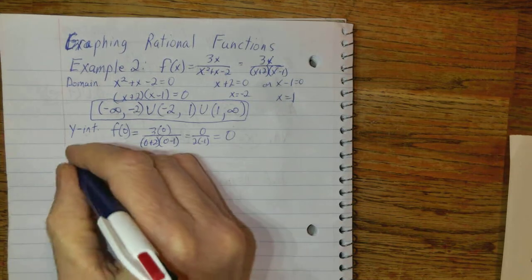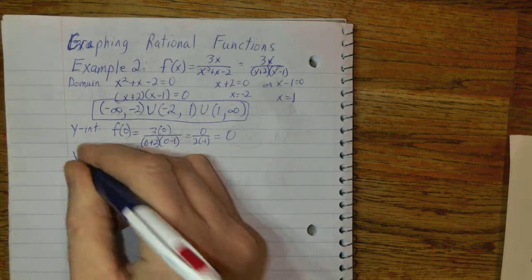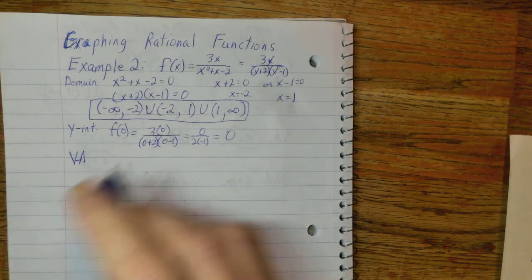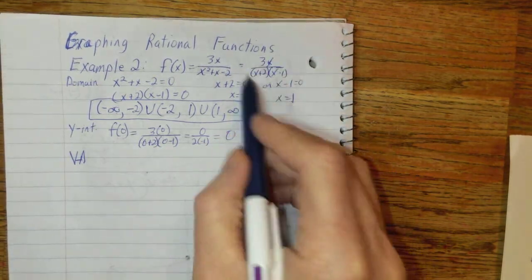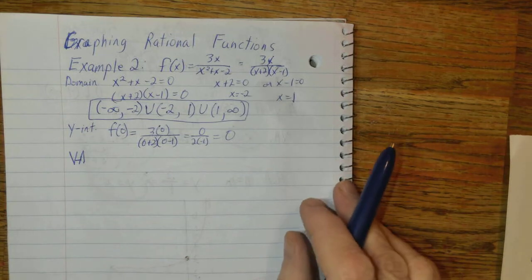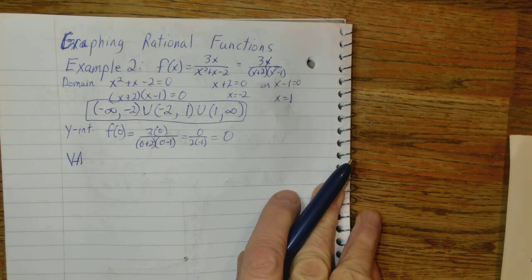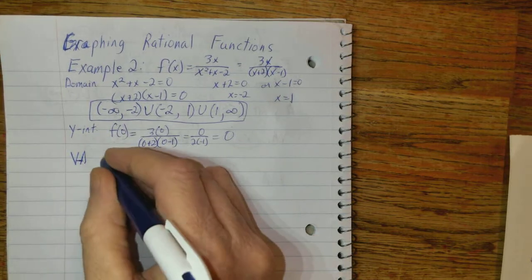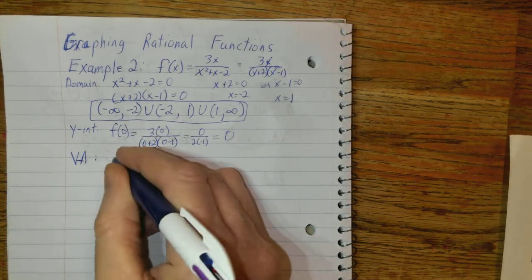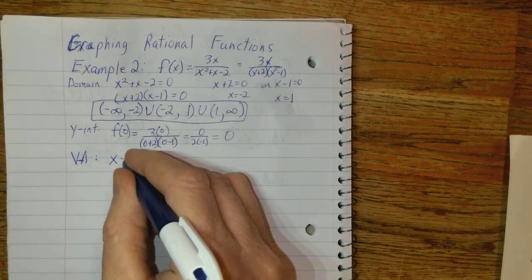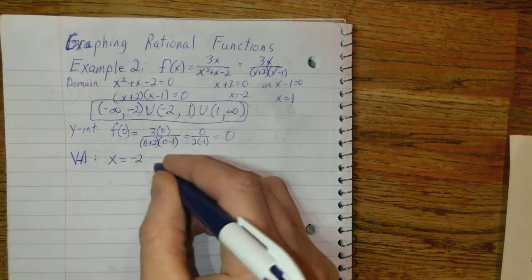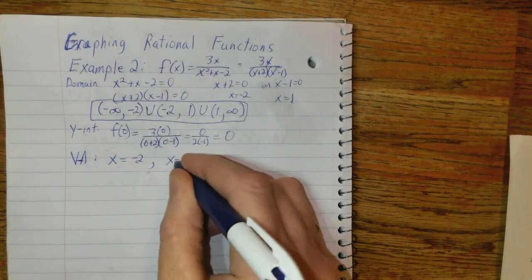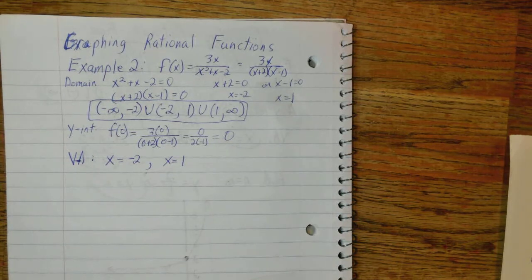Now, vertical asymptotes. Find the vertical asymptotes. This is our simplified version. It was the original version. It's also the simplified version. Set the denominator equal to 0. And we've already done that. So, I'm not going to do that again. So, x equals negative 2 is one of the vertical asymptotes. And x equals 1 is the other vertical asymptote.